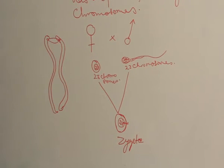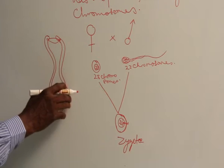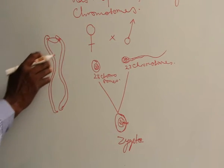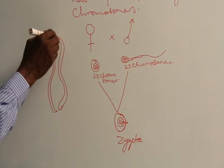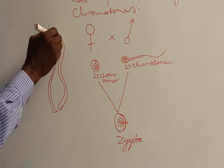So, homologous chromosomes are alike in shape, size, and constitution. That is, the genes they carry are alike.